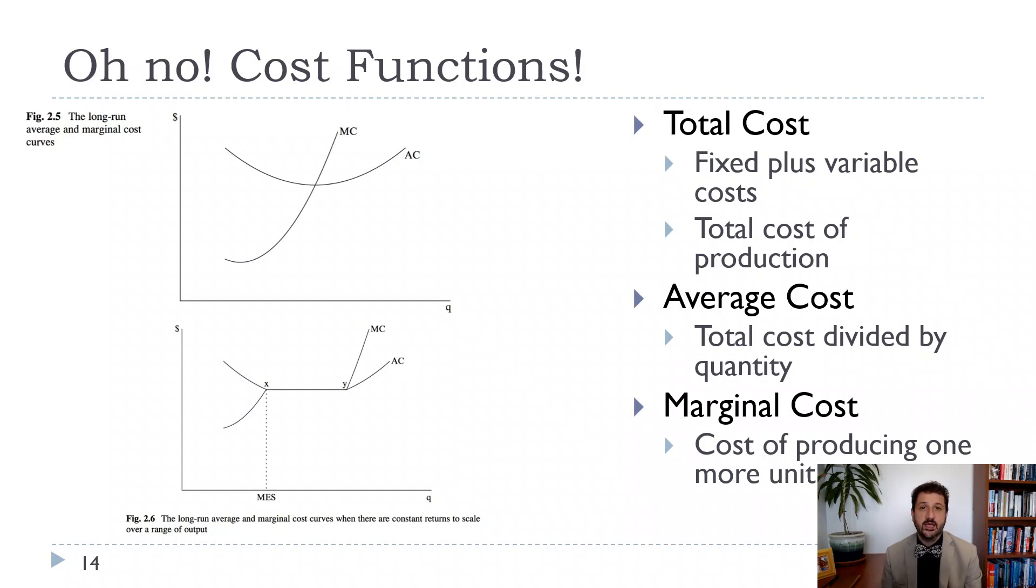So total cost is everything you spend to make your product. That's fixed costs plus variable costs. Fixed costs are everything that you need to spend that don't relate to how much you produce. So you can think about it as the salaries for the executives, maybe the factory cost. You can't produce anything if you don't have a factory or the storefront costs, whereas variable costs have to do with how much you produce. So they're going to increase with quantity.